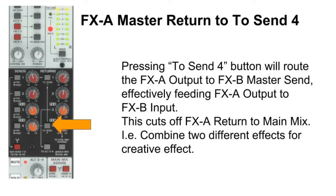Pressing the To Send Four button routes the FX-A module output to the FX-B master send or Auxiliary Four send. Again, this is a mono signal because Auxiliary Four is a mono channel. This also creates a special function because we can now feed the FX-A module's output into the input of the FX-B module, which allows us to combine two different effects.